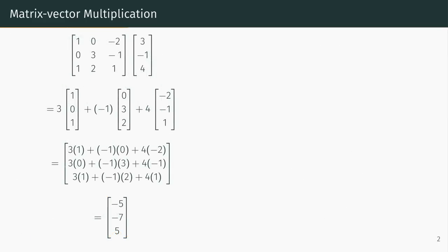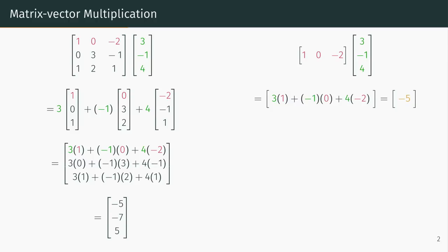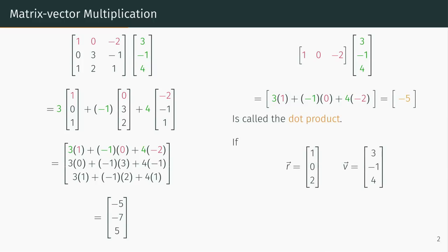There's another interpretation of a matrix-vector product coming from the rows of the matrix. The first row of the matrix can be thought of as a vector with three entries. Looking at the first row of the matrix times the vector, the result is obtained by multiplying corresponding coordinates and adding them up. This operation is also known as the dot product. Given two vectors with the same number of entries, the dot product is obtained by multiplying corresponding entries and adding them up. Using the rows of our matrix, the result of our matrix-vector product is a series of dot products, one for each entry of our final vector.